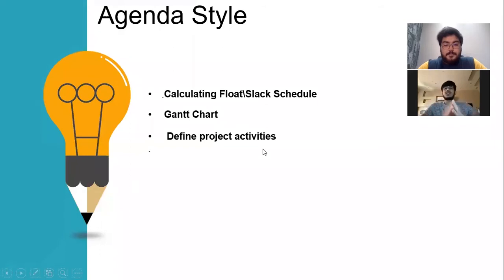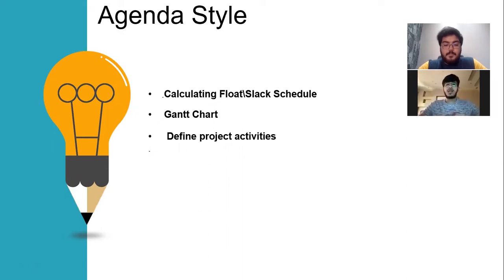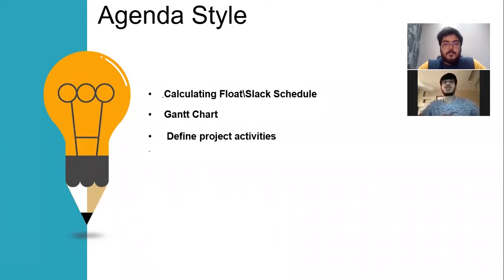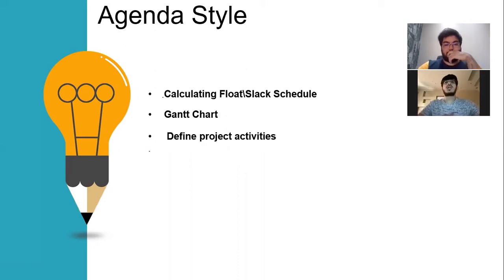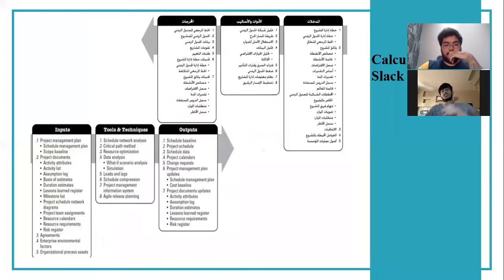This is our agenda. First, we will talk about calculating float/slack schedule. We will also talk about the develop schedule process with its inputs, outputs, tools and techniques. Second, Samir will talk about the Gantt chart for our project. Third, Yazeed will talk about defining project activities. Next slide, Samir.